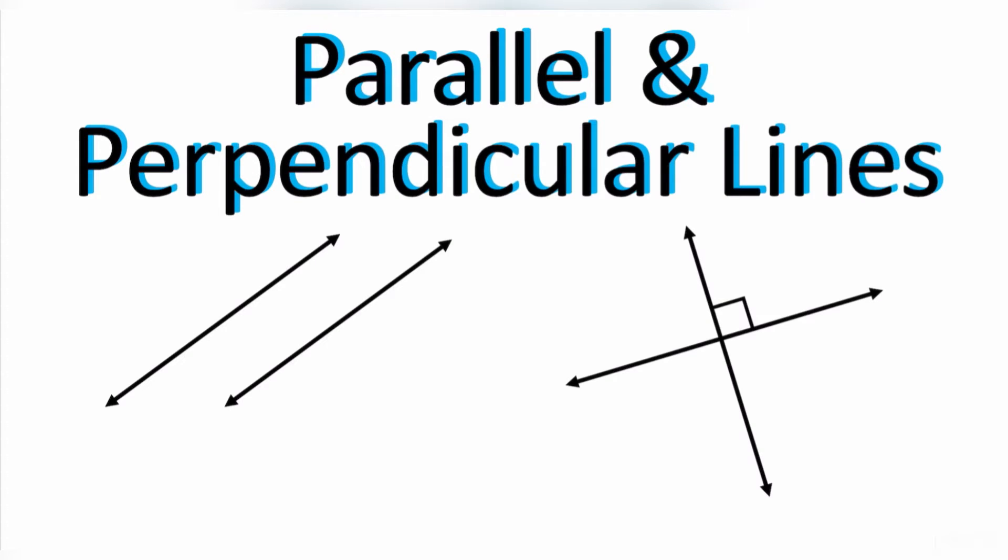Parallel and perpendicular lines. How do we know when two lines are going to be parallel versus when they're going to be perpendicular or when they're neither, when they're not parallel or perpendicular?